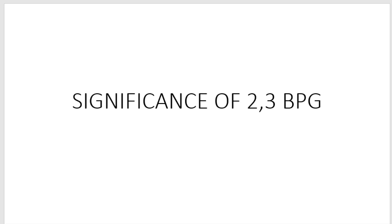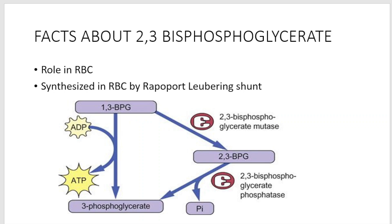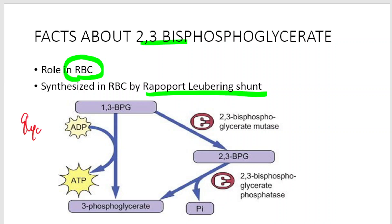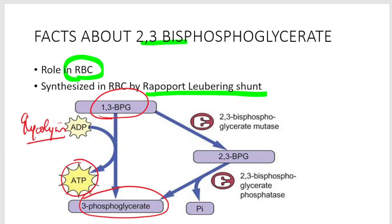Welcome back. Today we discuss the significance of 2,3-bisphosphoglycerate, which has a role mainly in RBCs. It is synthesized by the Rapaport-Luebering shunt. In normal glycolysis, the intermediate 1,3-bisphosphoglycerate is converted to 3-phosphoglycerate in a substrate-level phosphorylation step that synthesizes ATP.